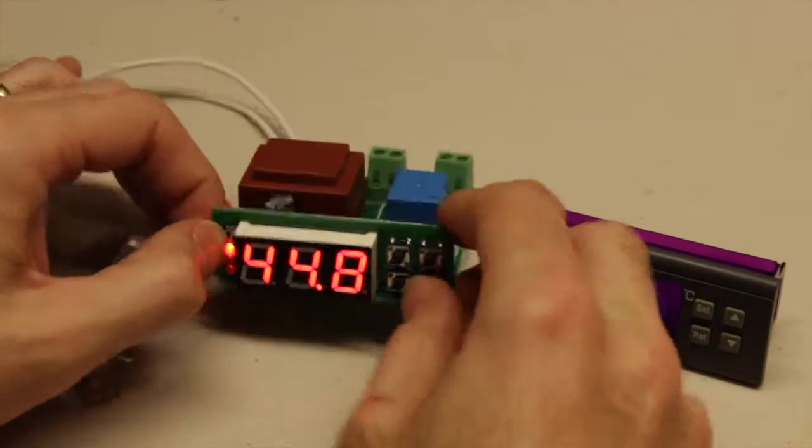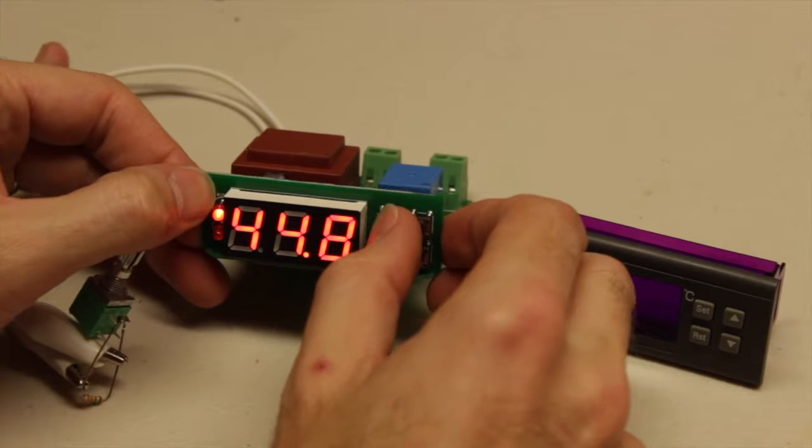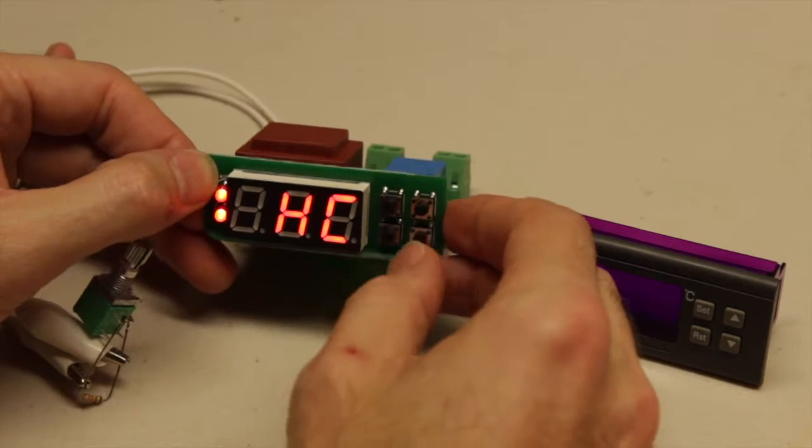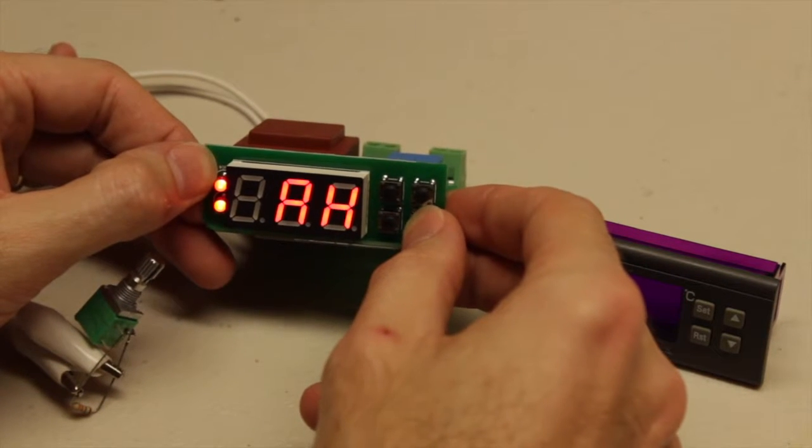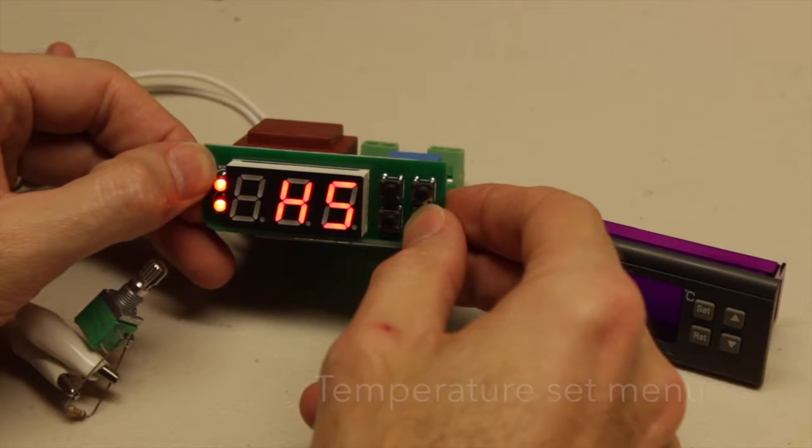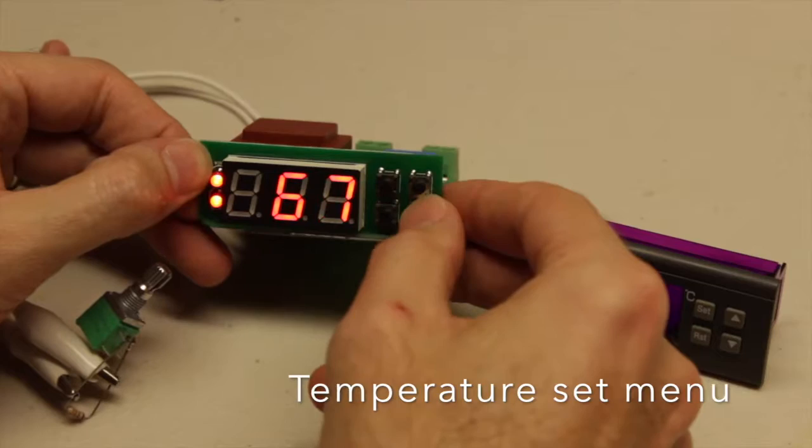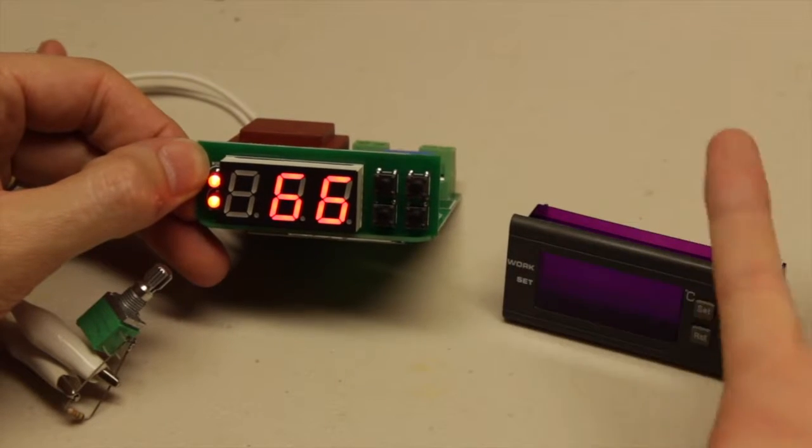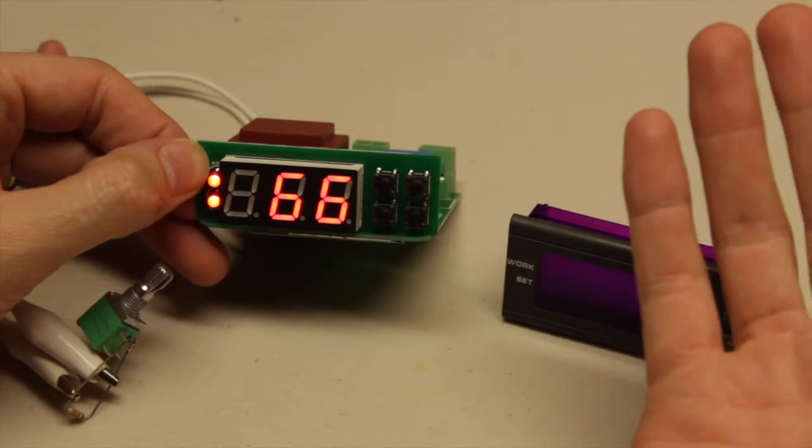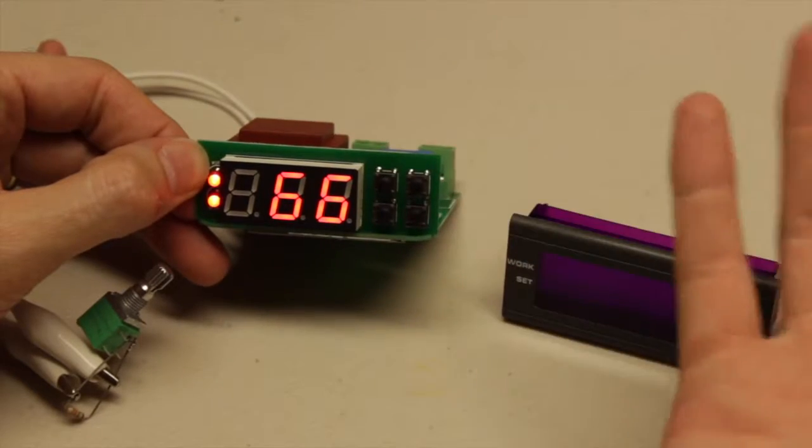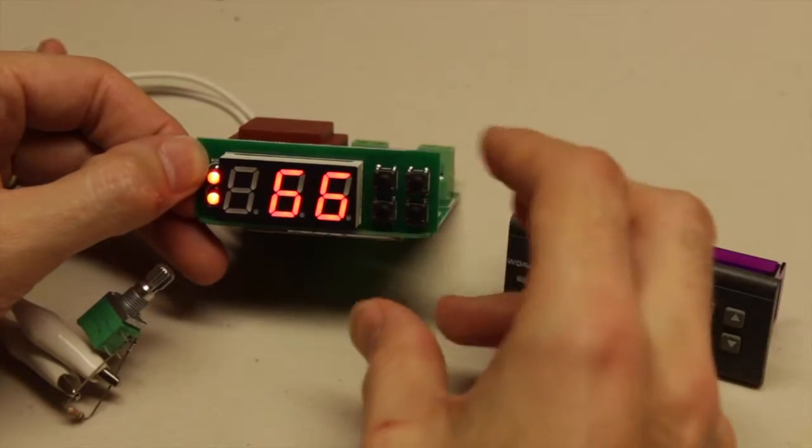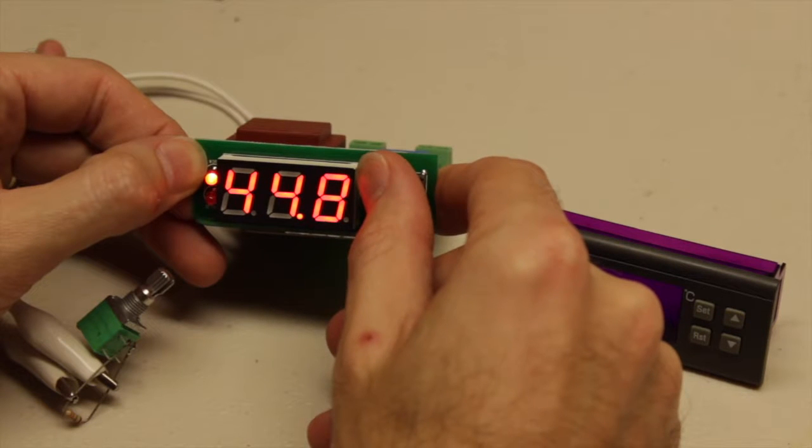Now if I go into the menu setting on this one by holding the set button, there are a few things that are wrong with this. This calibration, when I set the temperature, it's in steps of one degree Celsius, which is not really ideal for when I'm mashing. I'd like to have a little bit better control over that, even if it's not perfectly accurate. I'd like to be more precise about that.